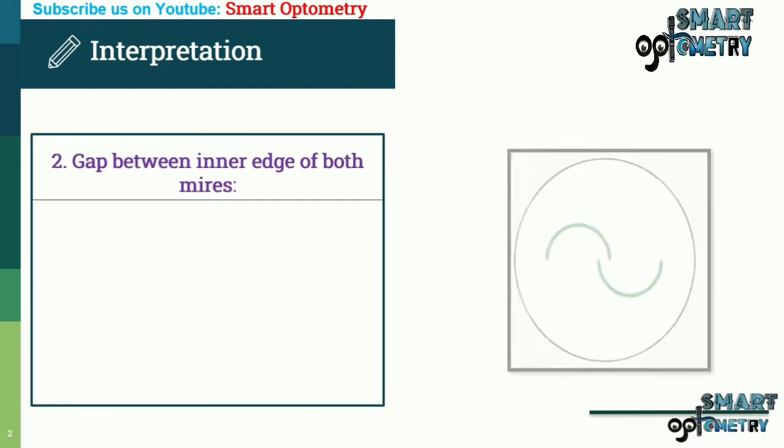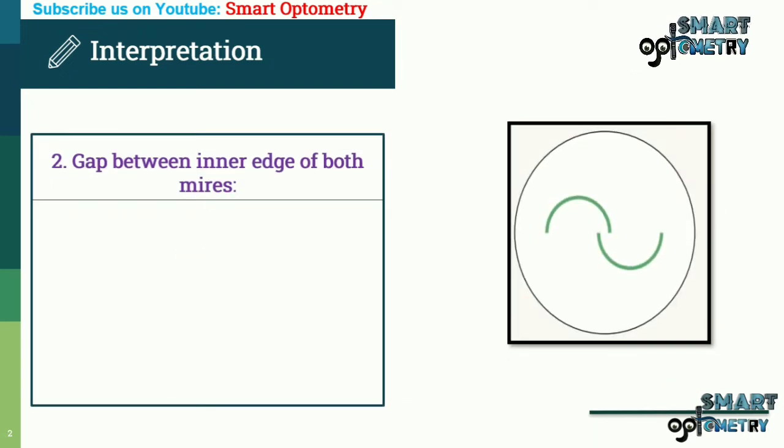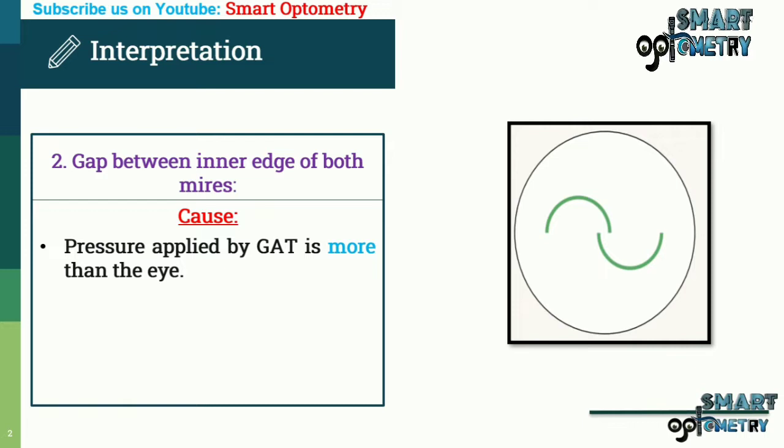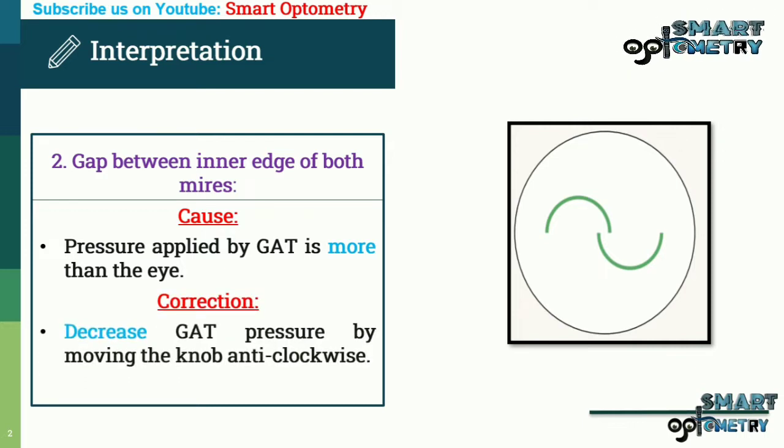Gap between inner border of both mires. This occurs if the pressure applied by GAT is more than the eye. It is corrected by decreasing GAT pressure by moving the knob anti-clockwise.